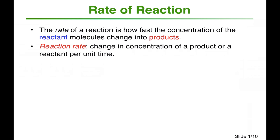Chemical Kinetics studies the rates of chemical reactions — how fast or slow the concentration of reactant molecules change into products. The reaction rate is the changing concentration of a product or reactant per unit time.